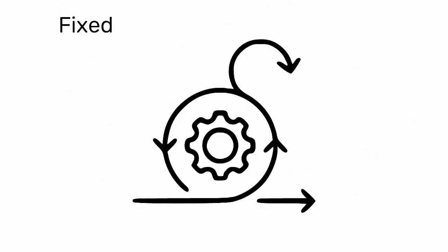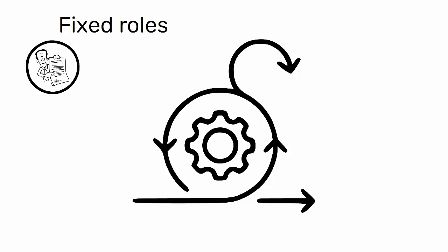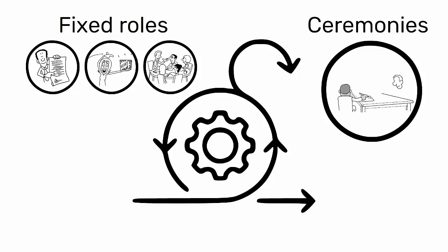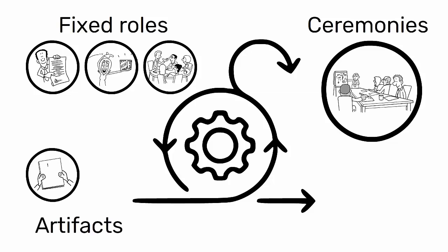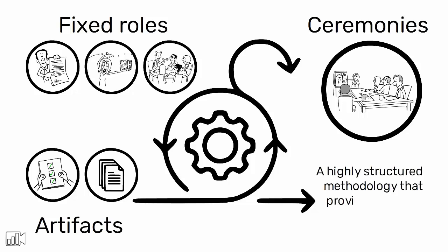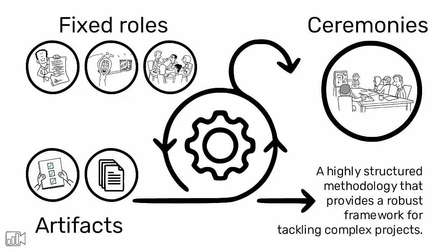Scrum relies on fixed roles — Scrum Master, Product Owner, and Development Team — ceremonies like daily stand-ups and sprint reviews, and artifacts like the Product Backlog and Sprint Backlog. It's a highly structured methodology that provides a robust framework for tackling complex projects.